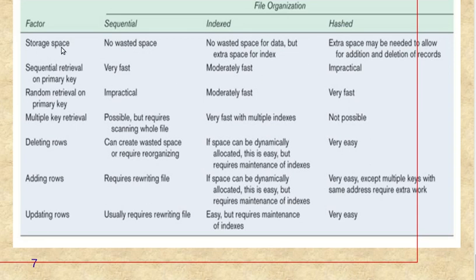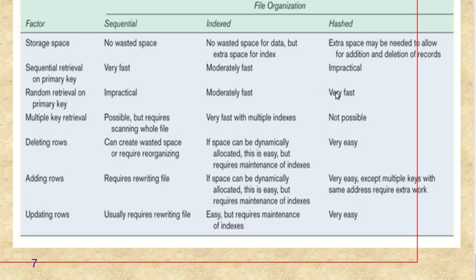In this comparison table: for storage space, sequential requires no extra space, index requires extra space for the index table, and hash may need extra space to allow for addition and deletion of records. For sequential scan on primary key it is very fast; for index it is moderately fast; for hash, random retrieval on primary key is impractical in sequential, moderately fast in index, and very fast in hash.